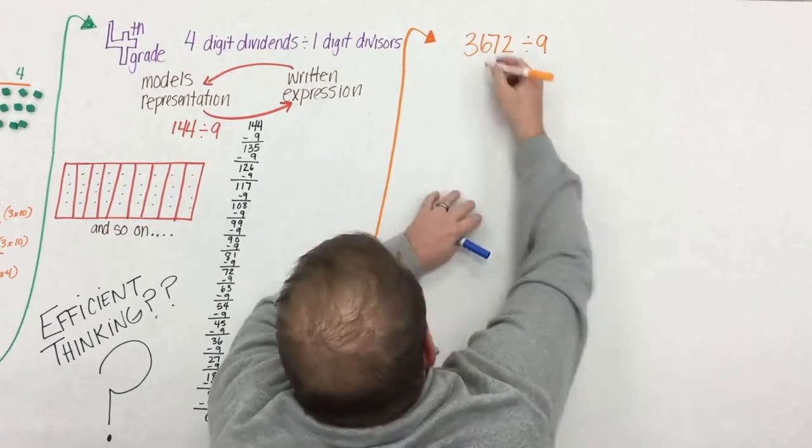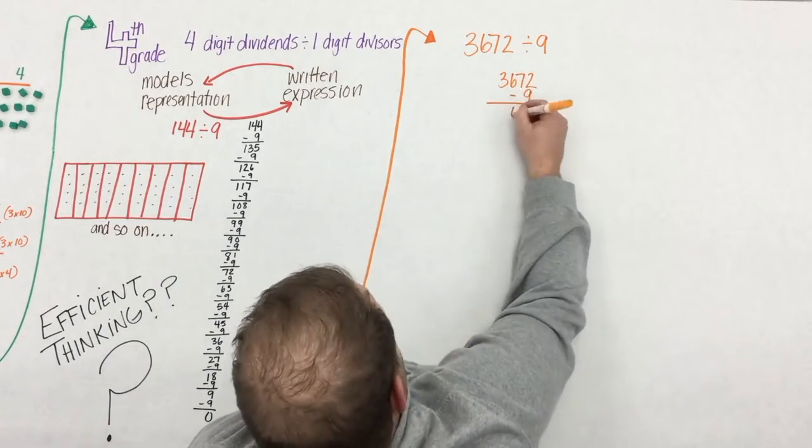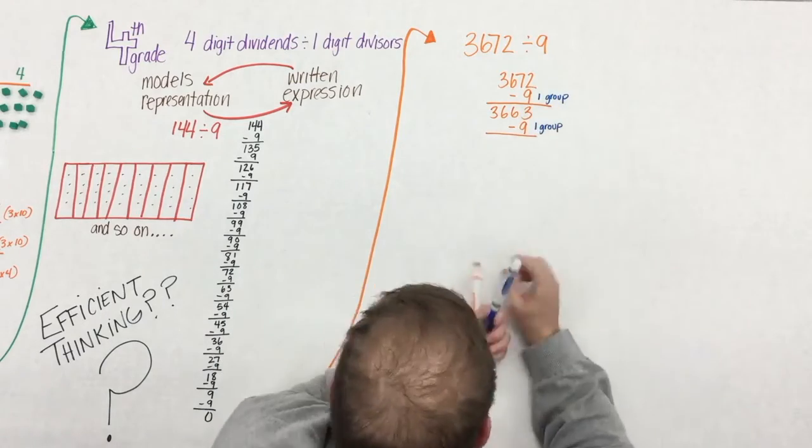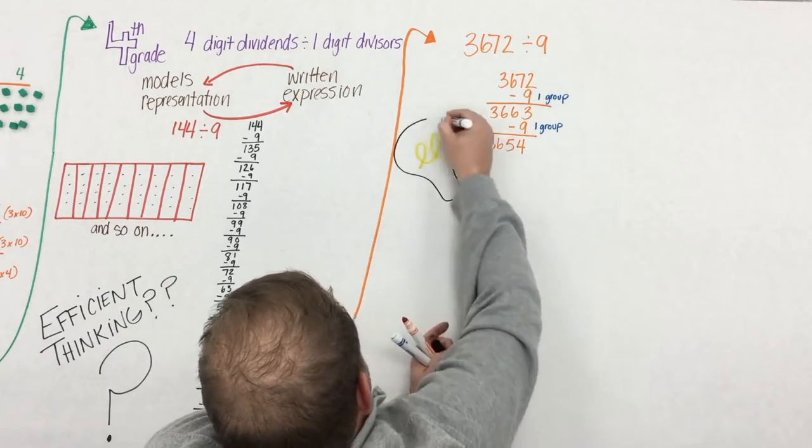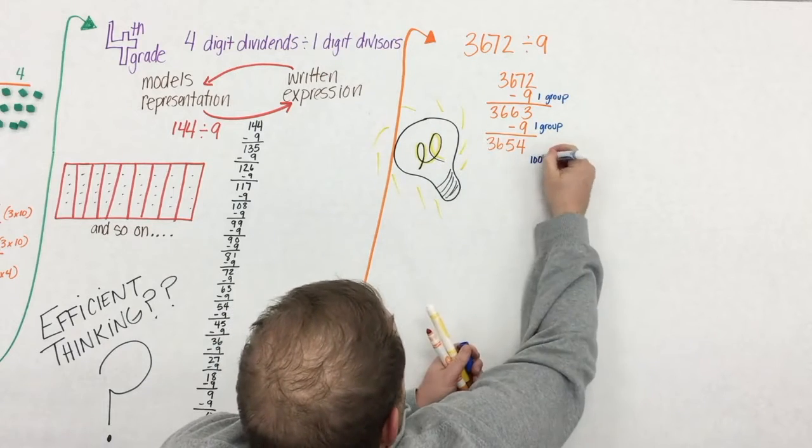So after students do the example of 144 divided by 9, we might throw them in a place with this number, where the dividend is 3,672. Well, they start removing groups of 9, and immediately they say, oh wow, I'm going to be here forever. This is going to take the longest time.